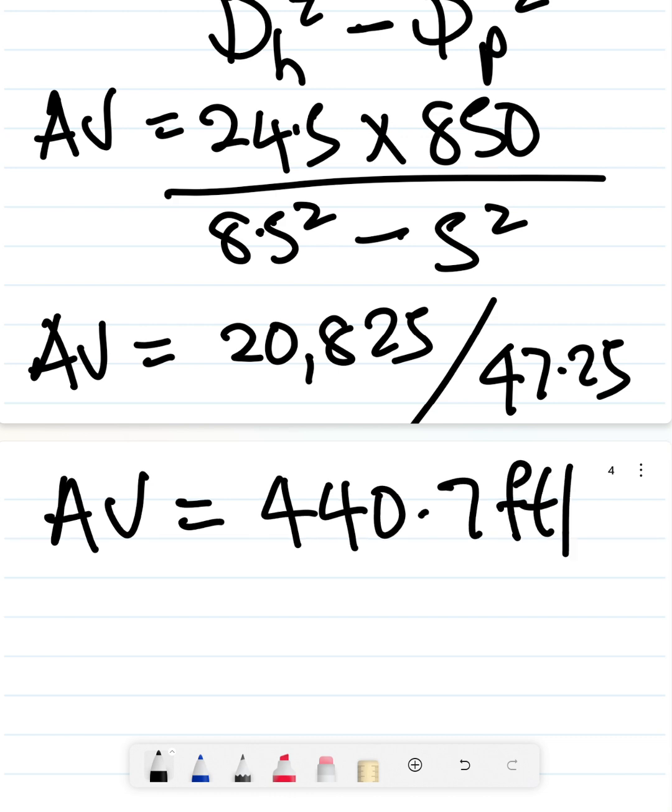Your annular velocity is going to be 440.7 feet per minute. You can see that this number is actually really high. It is high because we have assumed 850 gallons per minute for an 8.5 inch hole, quite ambitious.